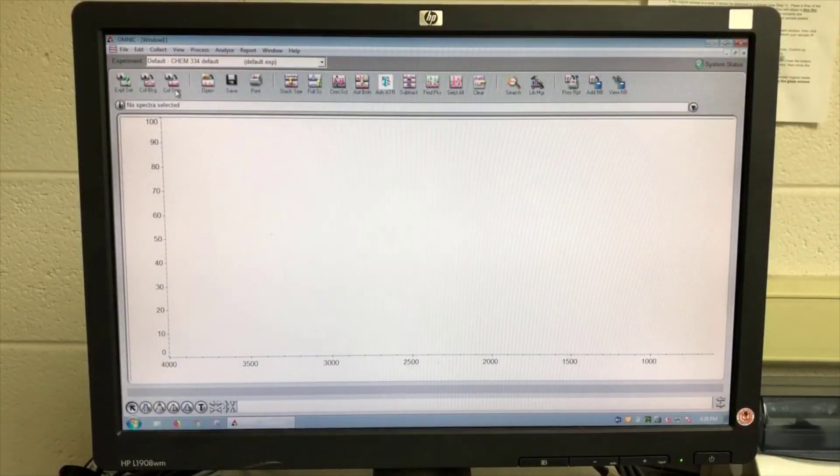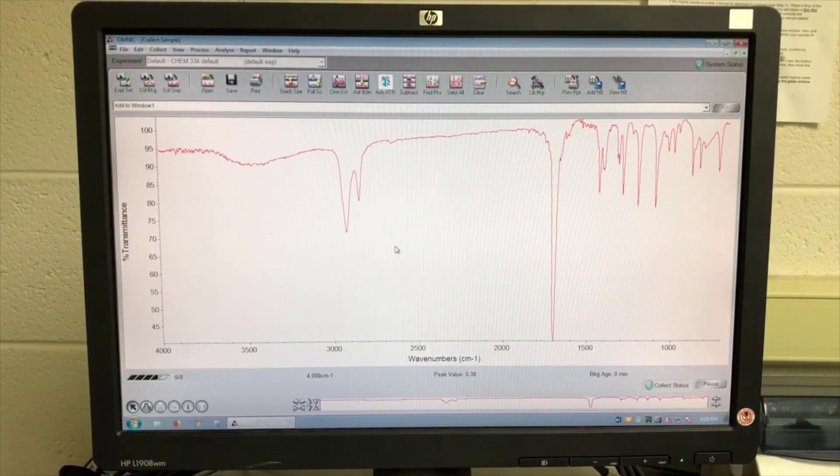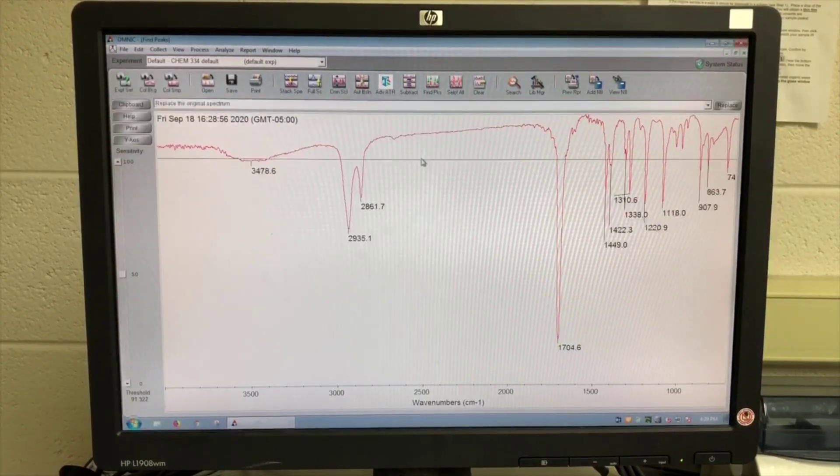Now I'm starting up the OMNIC application on the computer, and I'll hit the Collect Sample button, COLSMP, to get the process started. The experiment collects eight scans, and then displays the average results.